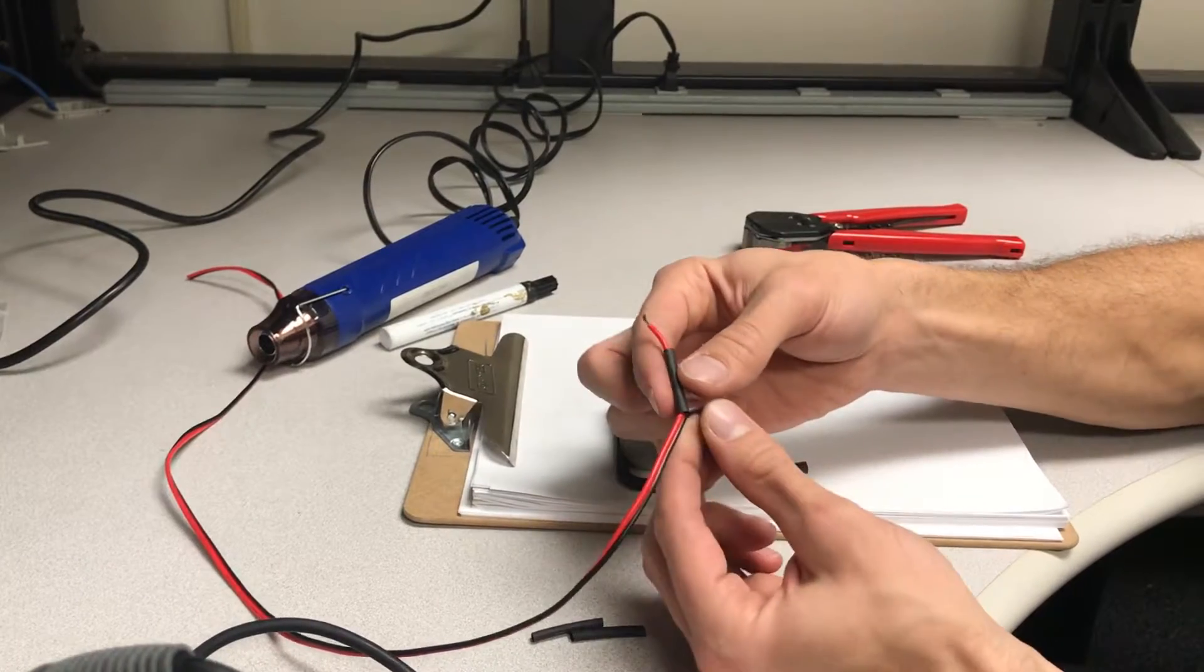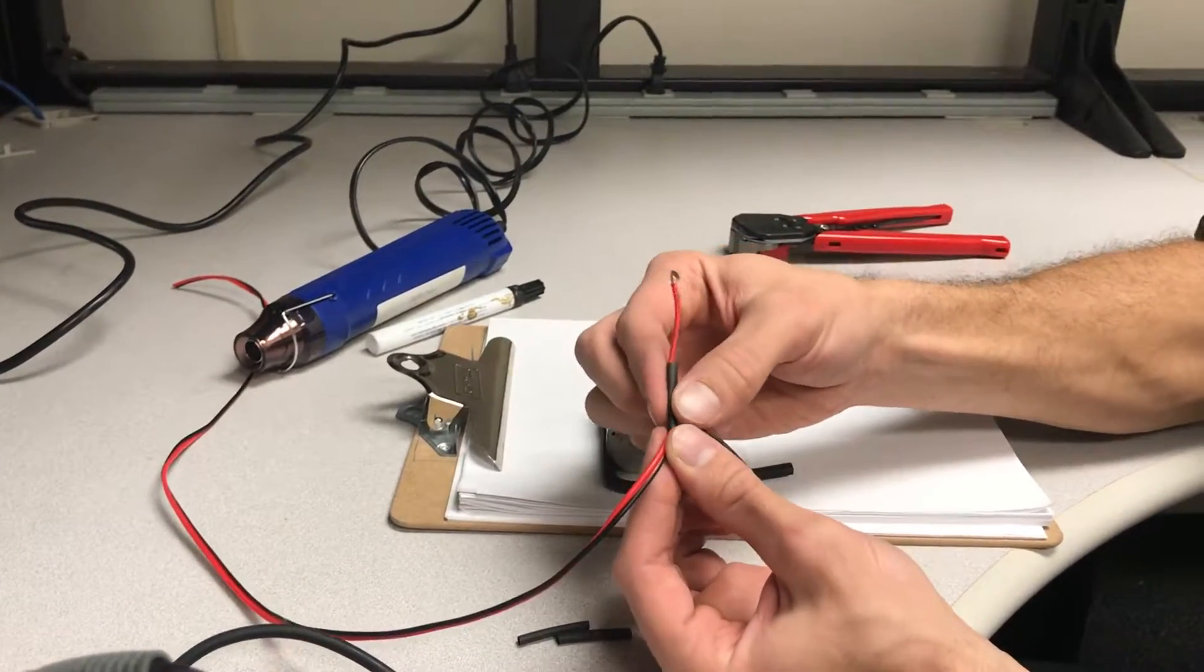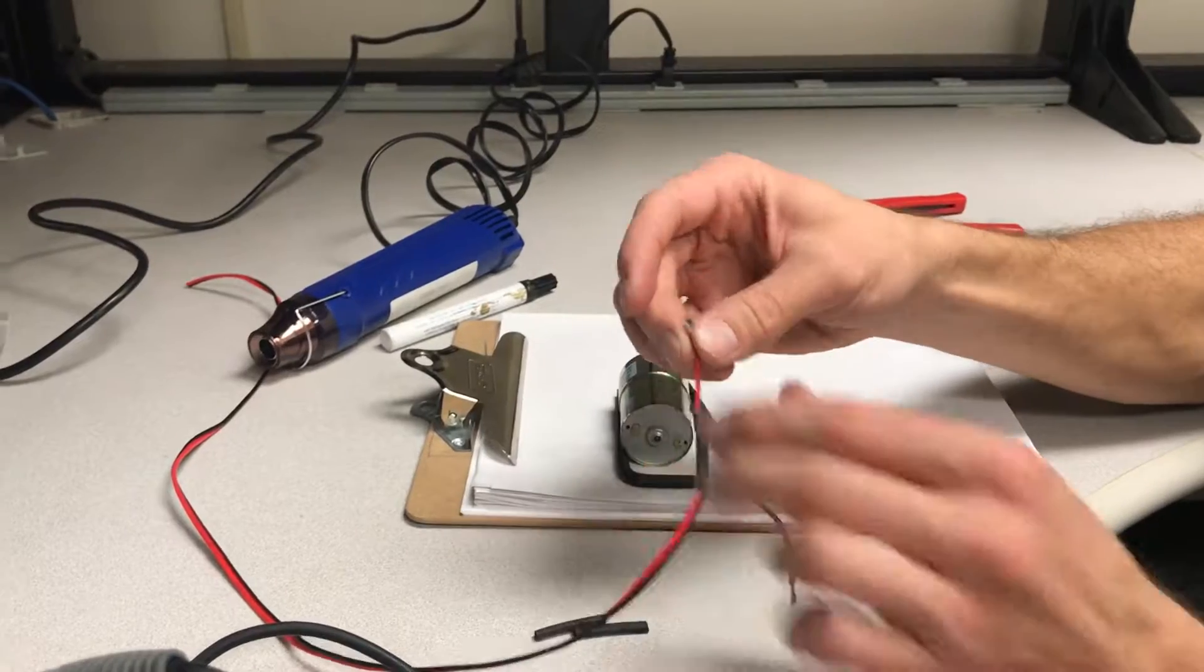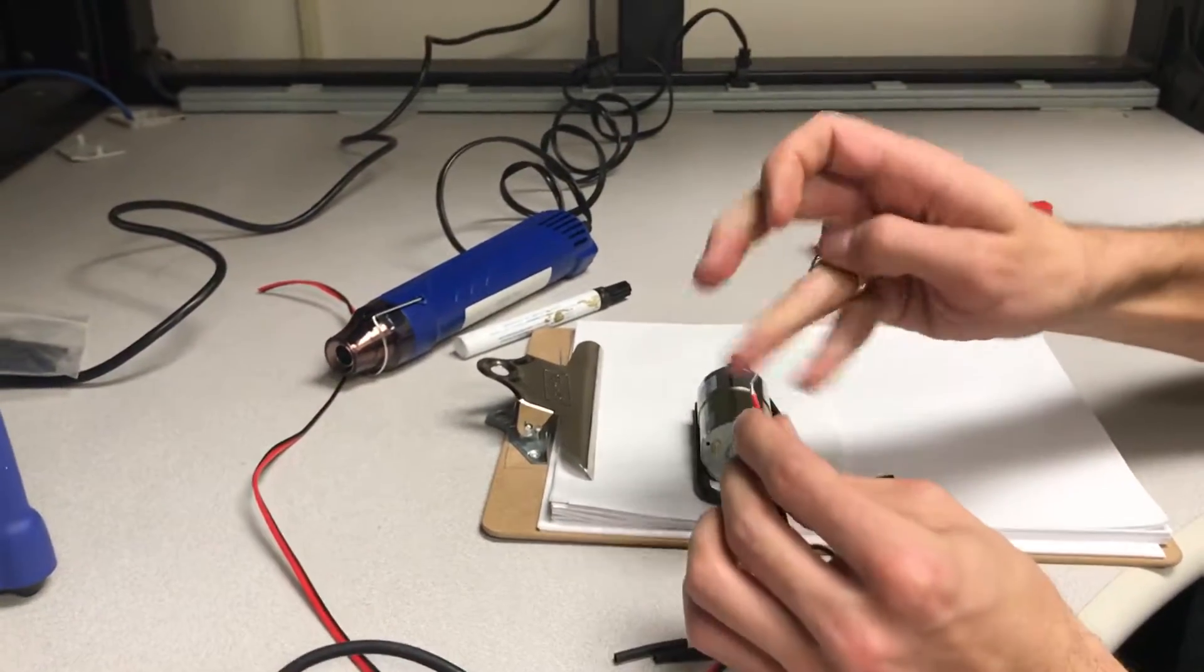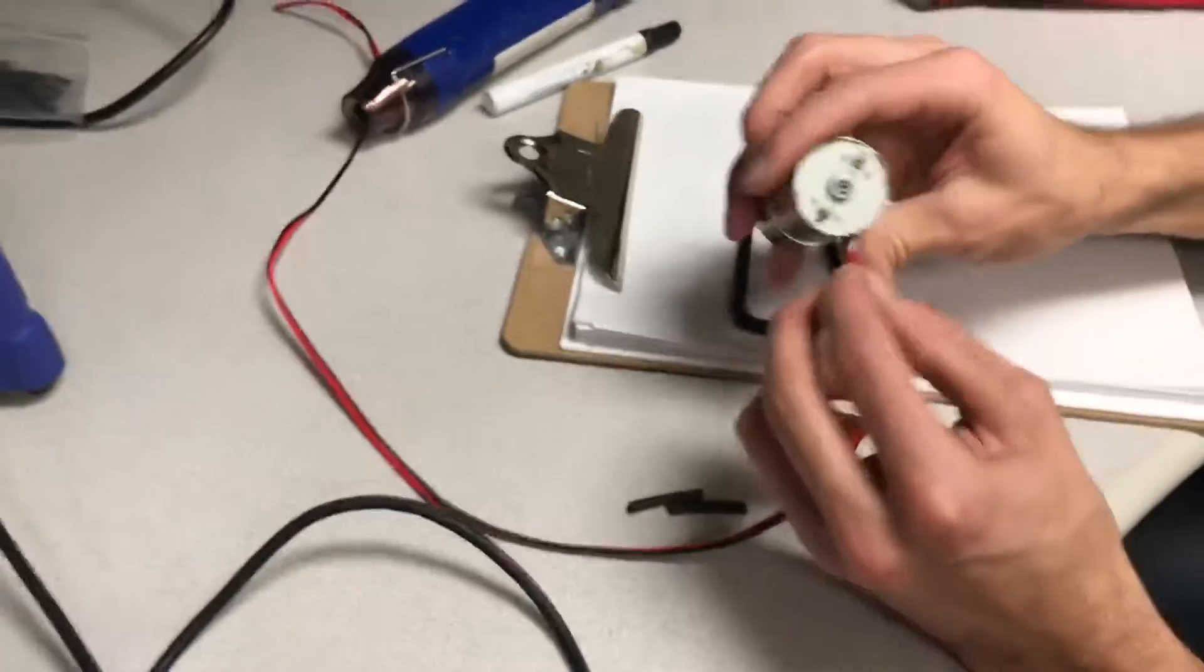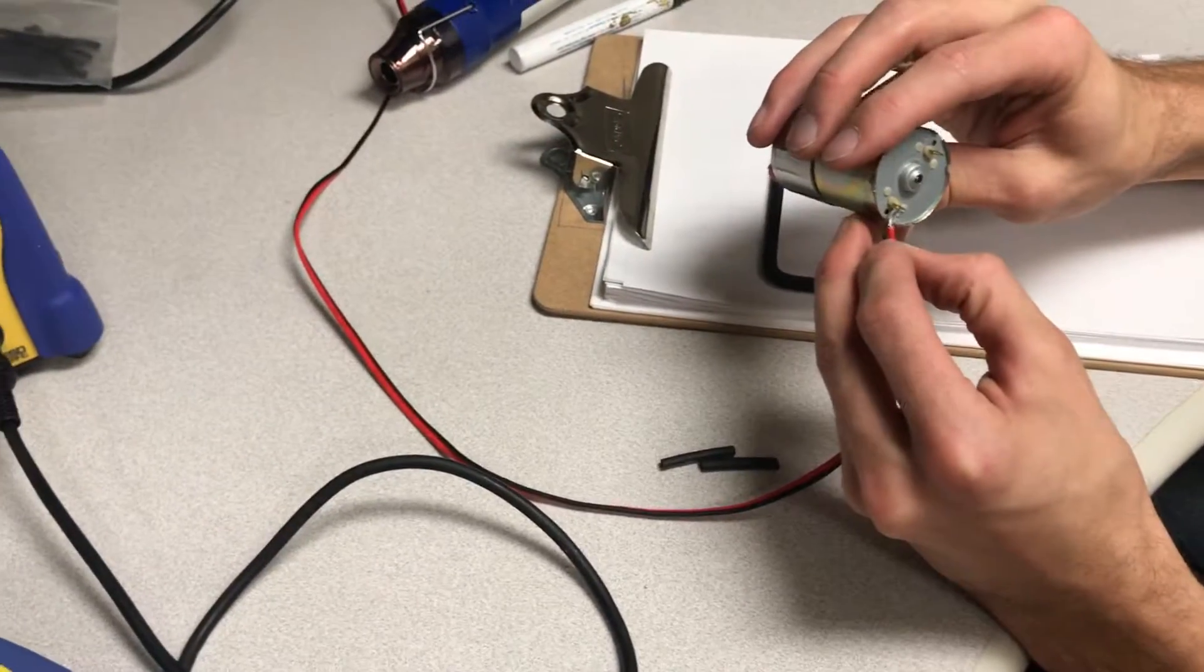You need to peel this back just a little bit more so that your heat shrink isn't right next to your solder joint. Otherwise the heat shrink will compress just from the heat of your solder joint. Make sure positive is positive.